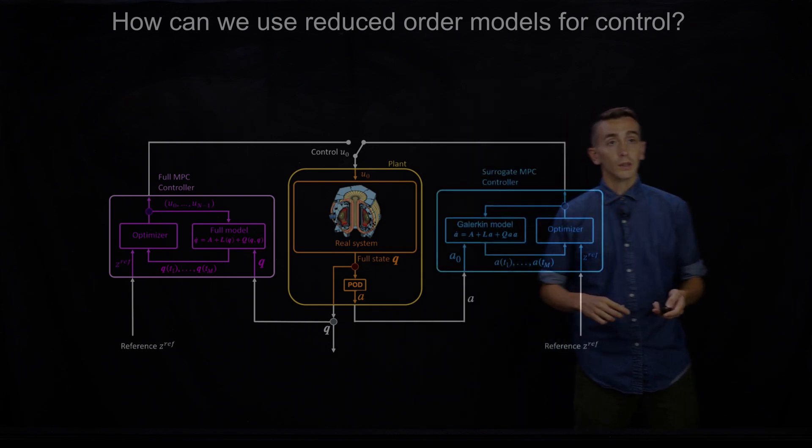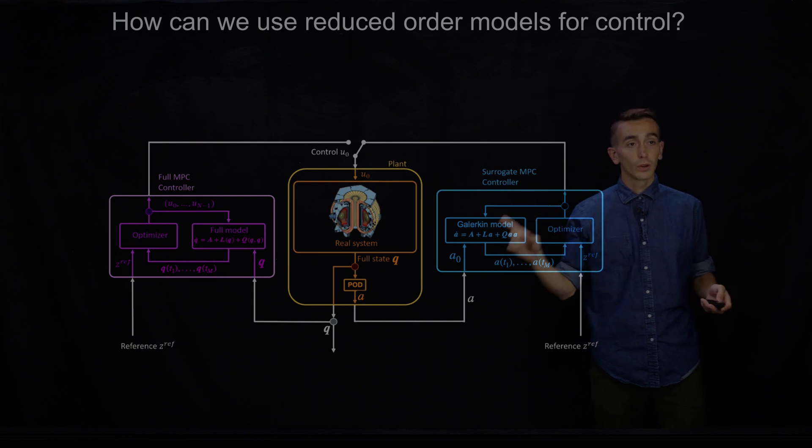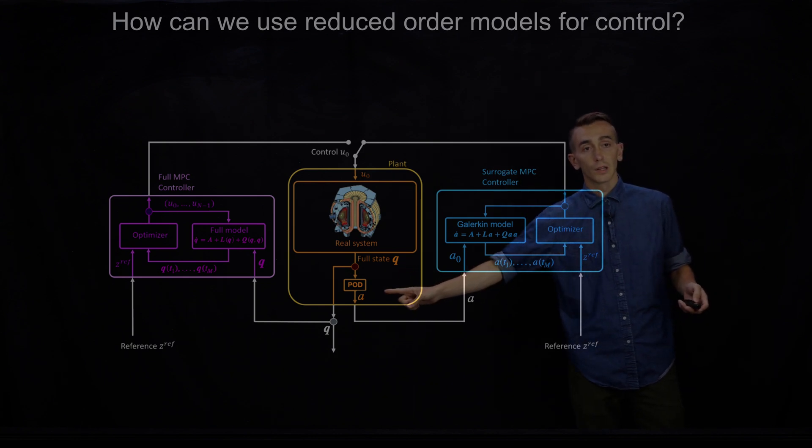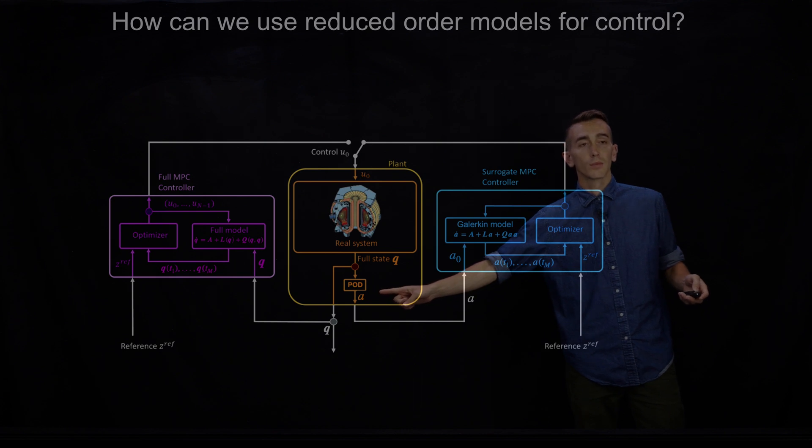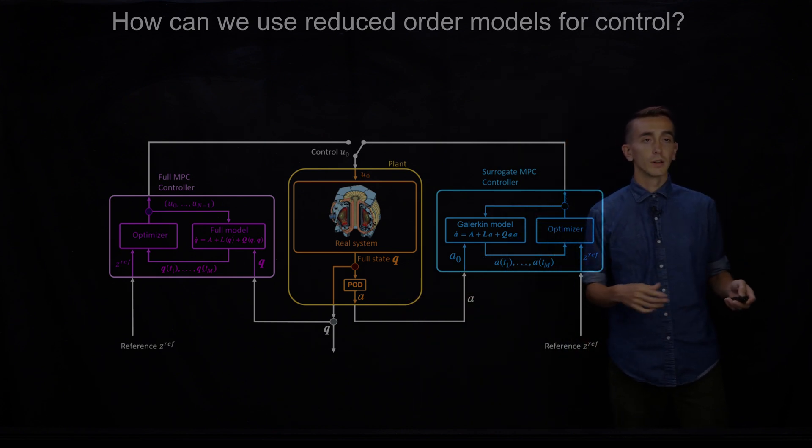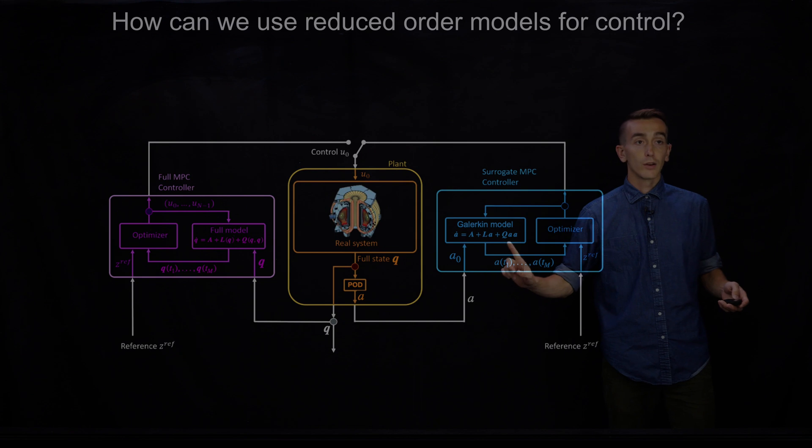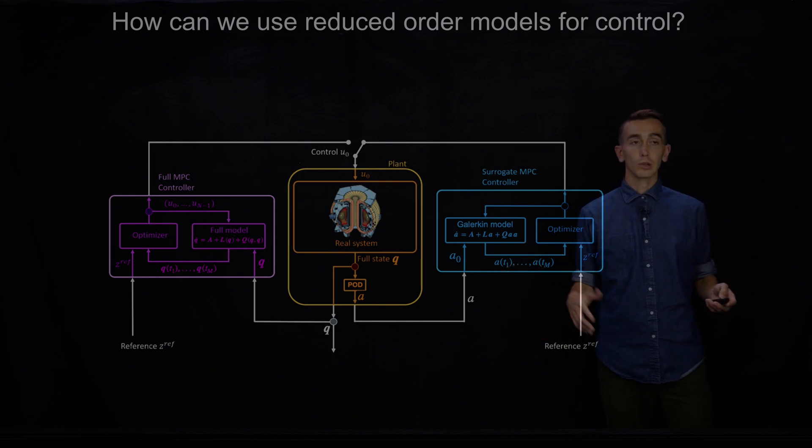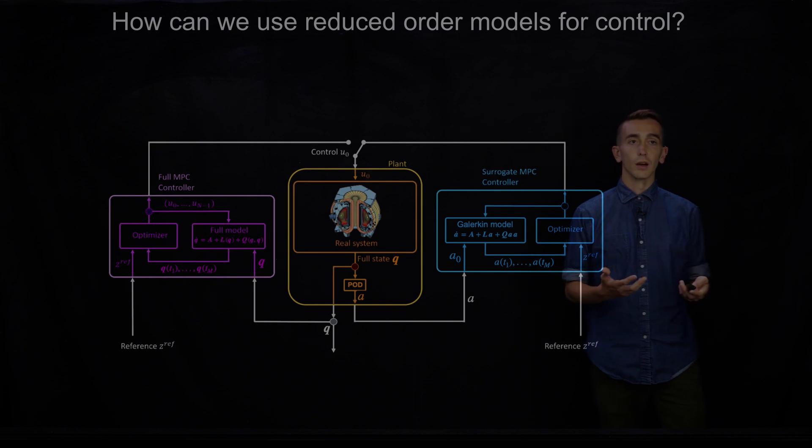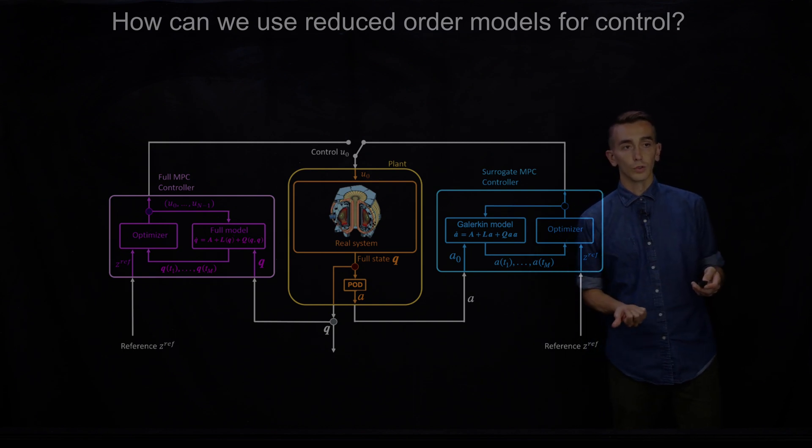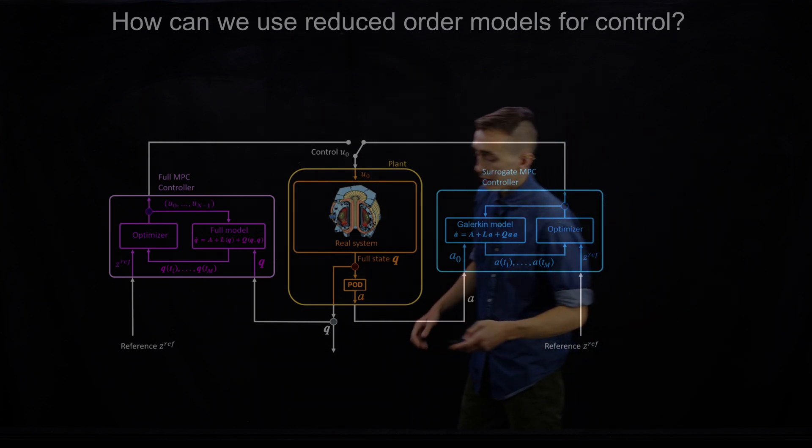So what we do instead is we use a surrogate MPC controller. So instead of taking the full state measurements, we now take some subset of the measurements. In this case, we're imagining we're doing the proper orthogonal decomposition and using the modes that you get from that. But that's sort of beyond the point here. Basically the point is you now have some subset of the measurements. Again, you have some reference for how you want them to look like. And now you have some surrogate model for how that subset of measurements is evolving. In this case, we're going to use the Galerkin models. But this can also be like a full black box neural network if you like. And then you play the same game. You close this in a closed loop and change the inputs to the plant. And this thing drives your system to Z.